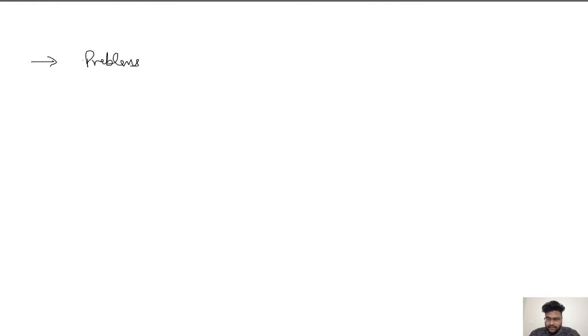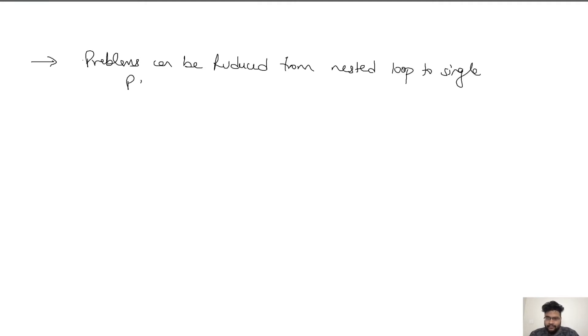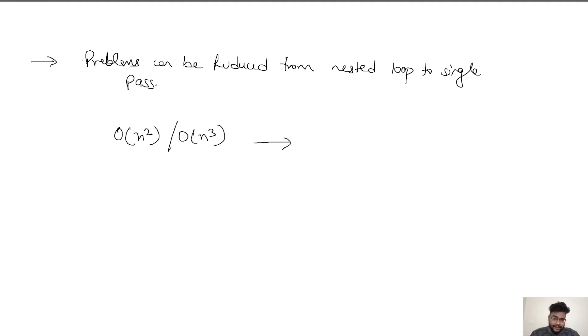The very first property is when the question is solvable using nested loops — basically when the problem can be reduced from a nested loop to a single pass. If a problem is solvable by brute force in O(n²) or O(n³), and we can see it should be doable in O(n) linear time, then we have to think about the two pointer technique.